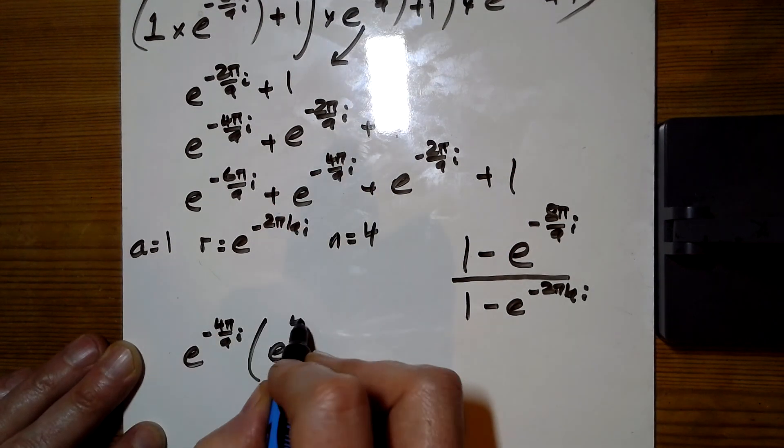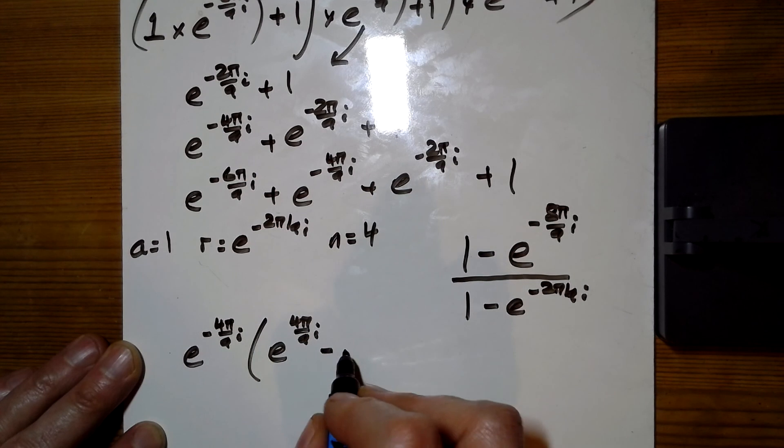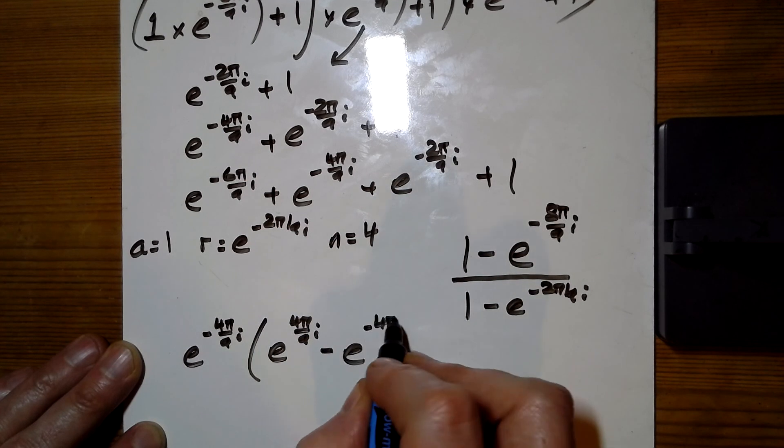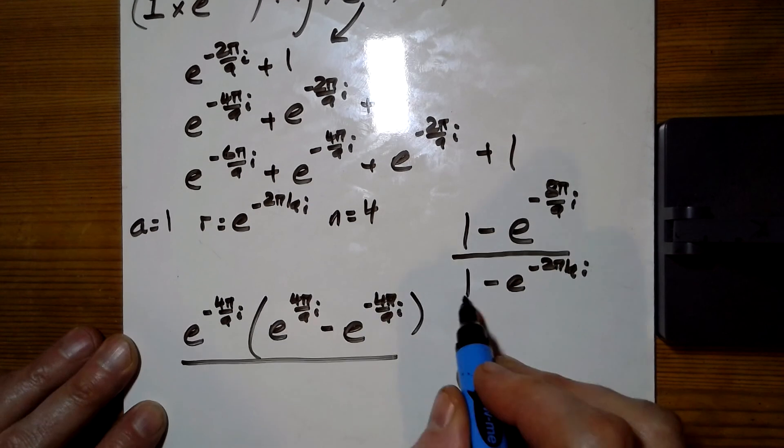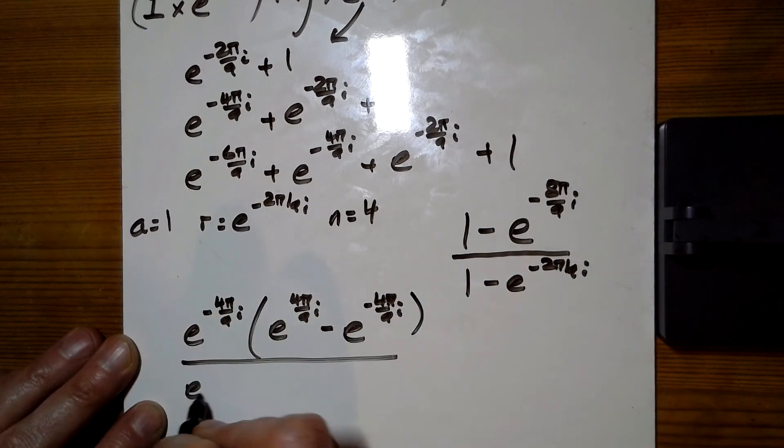We've got e to the 4pi over 9i for the first bit, minus e to the other 4 there. On the bottom, we'll just take out half of those. So that's e to the minus pi over 9.